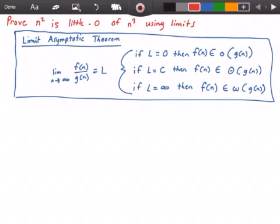Hey guys, and welcome to this video on algorithm analysis. In this video we want to prove that n squared is little-o of n cubed using the limit asymptotic theorem.